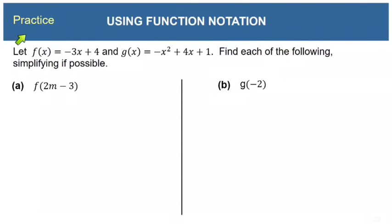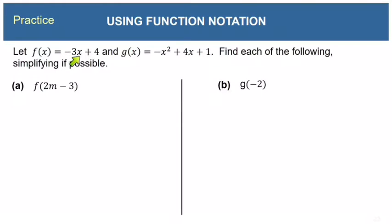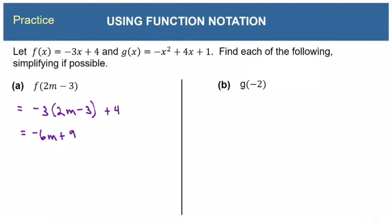Here are a couple of homework problems to try on your own. You have an f function and a g function — pause the video and try evaluating each expression. Let's go through it together. For f of 2m minus 3, we use the f function but replace x with 2m minus 3, giving us negative 3 times (2m minus 3) plus 4. Distributing the negative 3 and adding 4, then combining like terms gives us negative 6m plus 13.